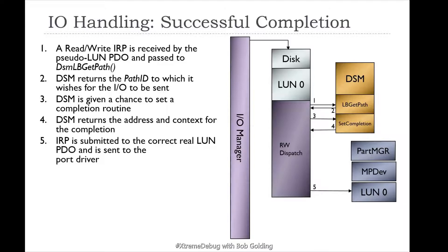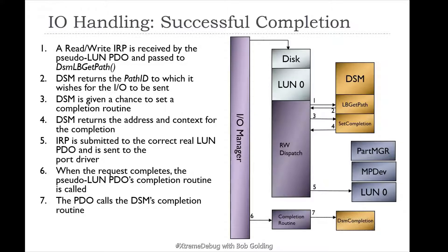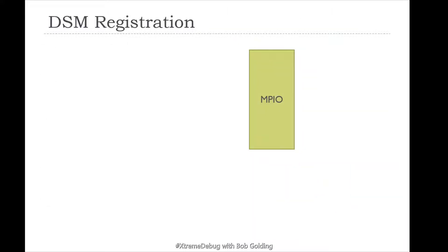The IRP is submitted to the correct real LUN and is sent to the PDO with a port driver controlled by store port. You can see the part manager, MP dev, and MP dev zero. MP dev is actually the MP dev portion of the class driver which shows up on a dev stack as disk.sys. When the request completes, the pseudo-LUN's PDO completion routine is called, and the PDO will then call the DSM's completion routine, and the request is completed.